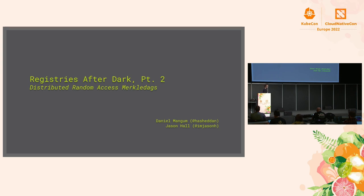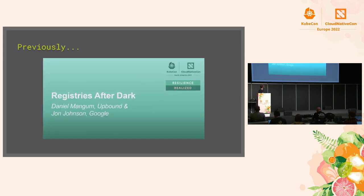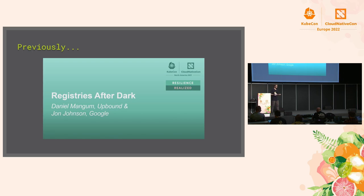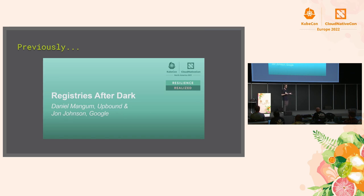This is Part 2. The first part was given at KubeCon North America a few months ago with John Johnson, and in that presentation we talked about how to get things out of container registries — specifically the advantages of pulling by digest and the general structure of how a registry works. In this talk we're focusing on how to get things into the registry, including things you may not expect to put in a registry.